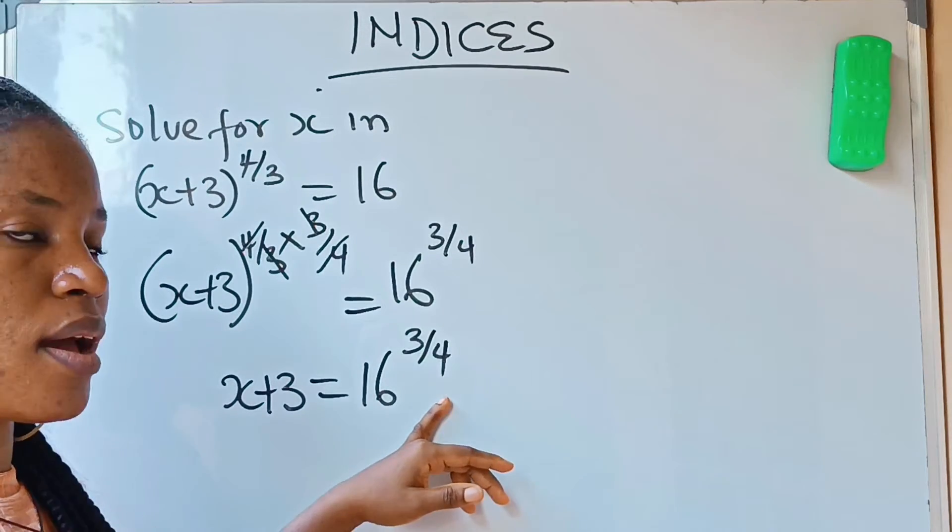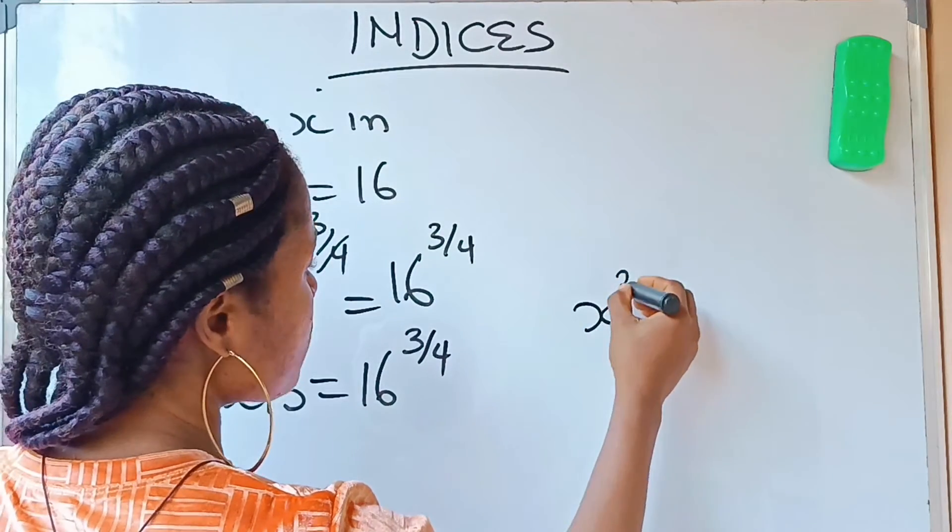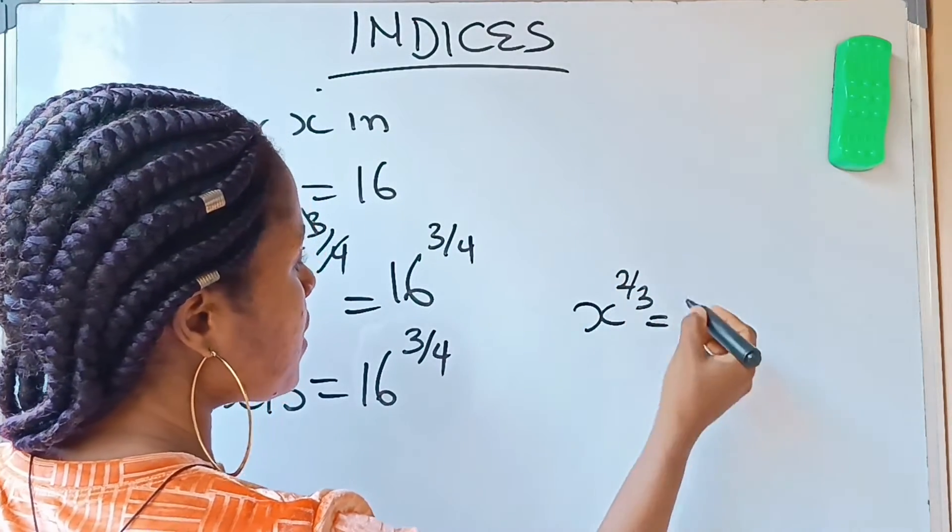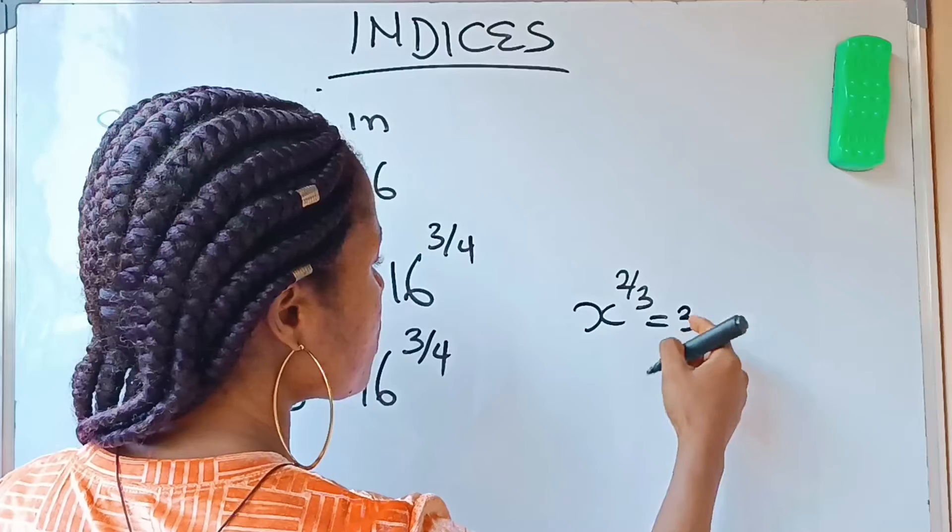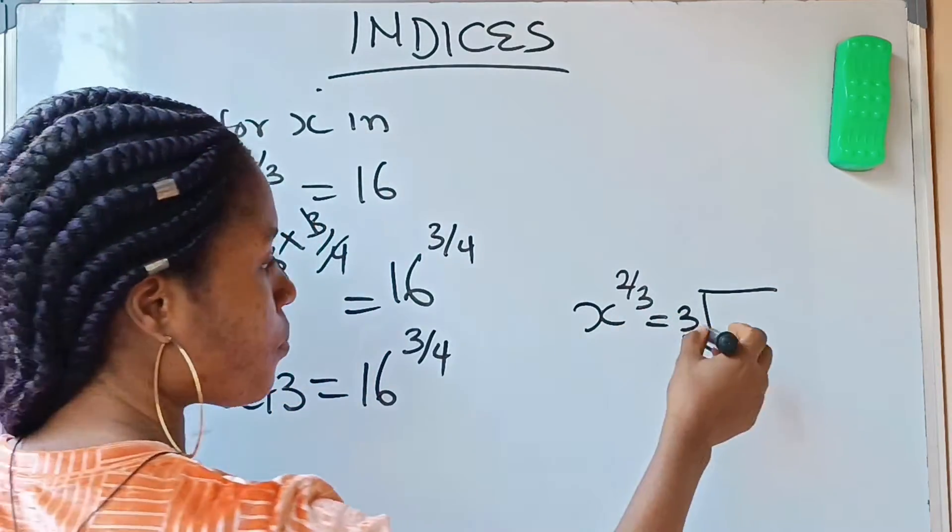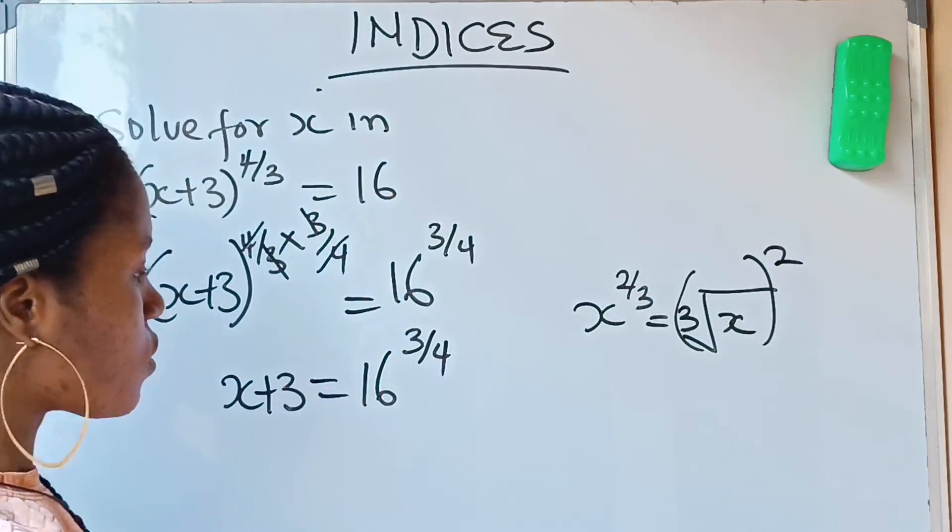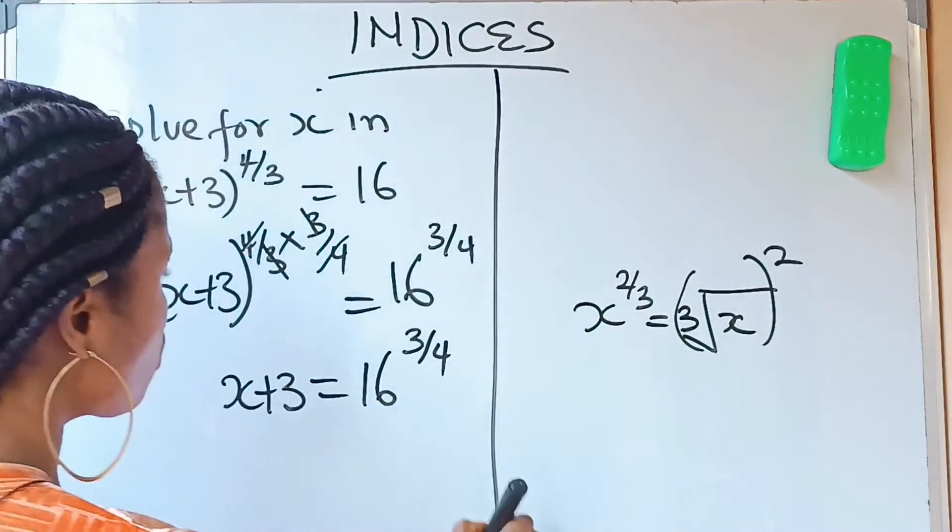But there is this law in the indices that states that, for example, if you have x raised to the power 2/3, that is the same as the cube root of x raised to the power 2. So I'm going to relate that to what we have here.